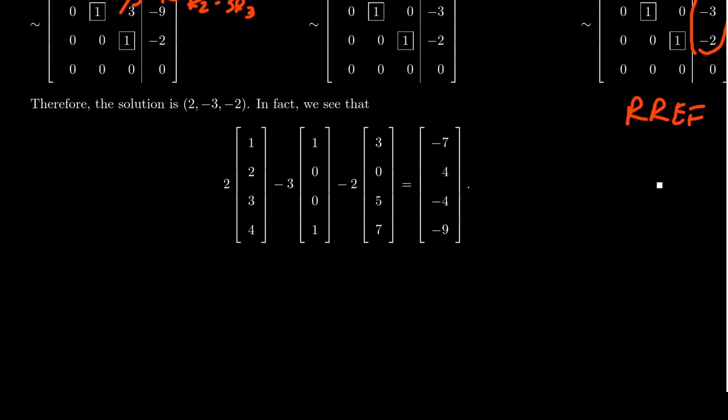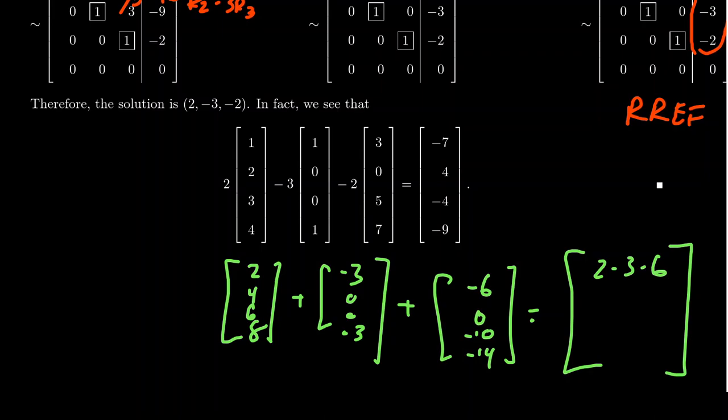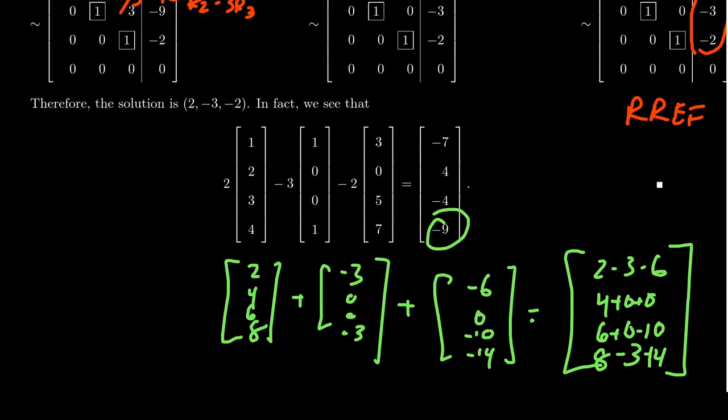And if you have any doubts about that, we can actually multiply these things outright. 2 times the first vector gives us 2, 4, 6, 8. Who do we appreciate? The next one gives us a negative 3, 0, 0, negative 3. And then the last one gives us a negative 6, 0, negative 10, and negative 14. Combining all these things together, you're going to get 2 minus 3 minus 6. You'll notice that 2 and negative 3 come together to give us a negative 1, minus 6 is a negative 7. Well, that's good to know. You're going to get 4 plus 0 plus 0. That's an easy one to do. That's a 4. And then the next one, you're going to get 6 plus 0 minus 10. That should be a negative 4. Well, there you go. And then finally, 8 minus 3 minus 14. 8 take away 3 is 5. 5 take away 14, it's going to be a negative 9. And so we can check our work. In fact, this is the right linear combination that forms B.